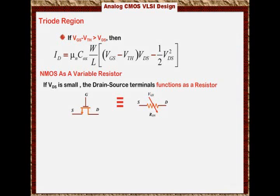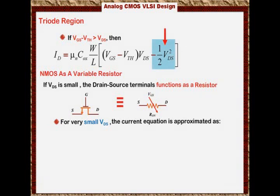So for very small VDS, if VDS is much much less than the overdrive voltage, the current equation is approximated. Basically what we do is we ignore the square term.